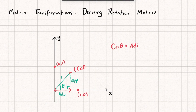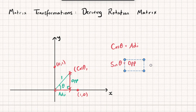With similar logic we can find the y coordinate — that's how high up we've gone from the x axis, which is the opposite side. So sin θ = opposite / hypotenuse = opposite / 1, meaning sin θ equals the length of the opposite side. Therefore the y coordinate is sin θ.